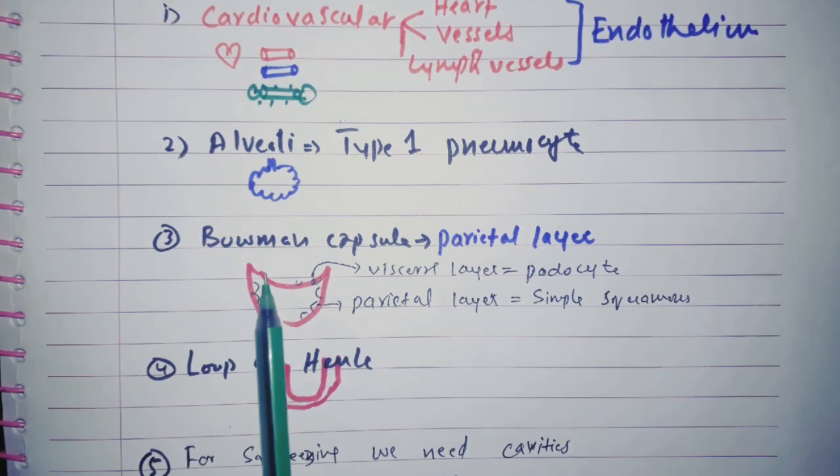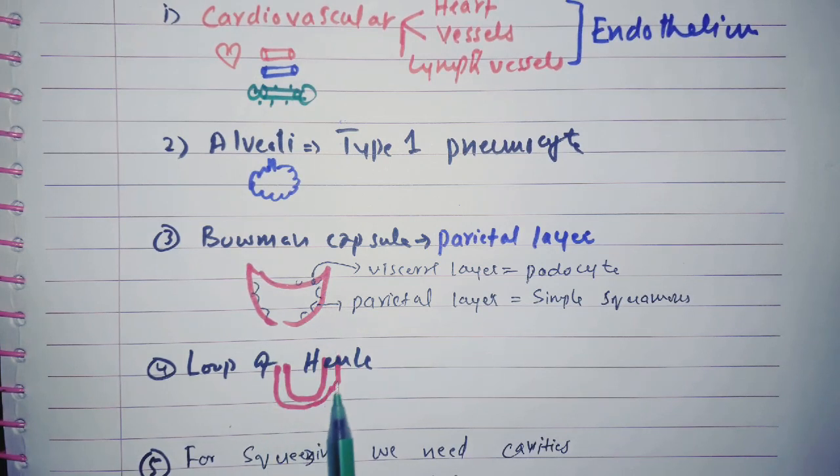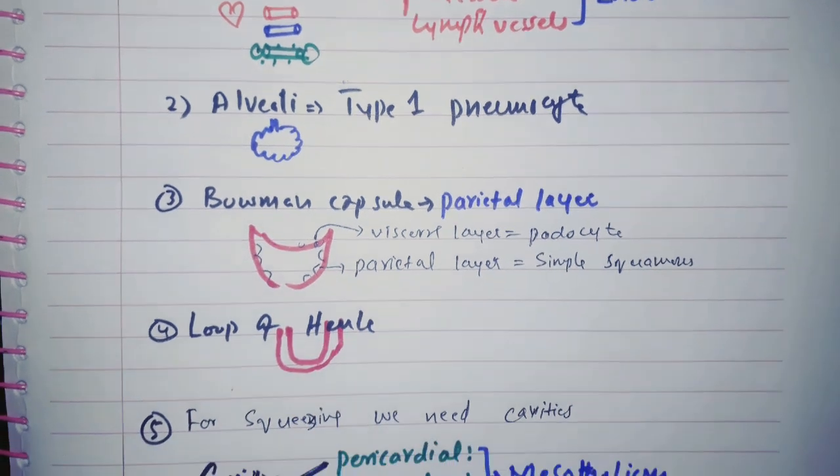Now in the kidney to the Bowman capsule, same here we are having the loop of Henle. As you can see these both are same. So loop of Henle also having the simple squamous epithelium.